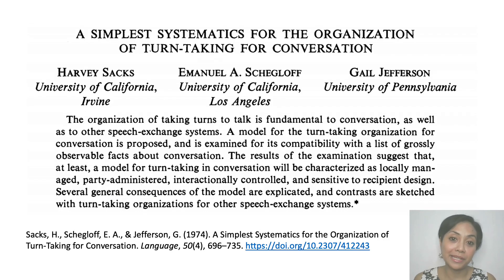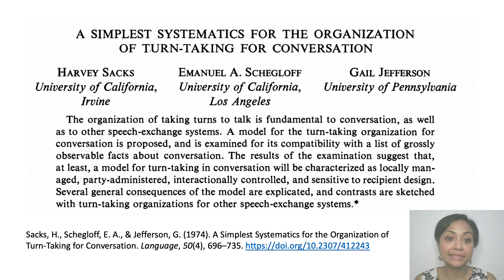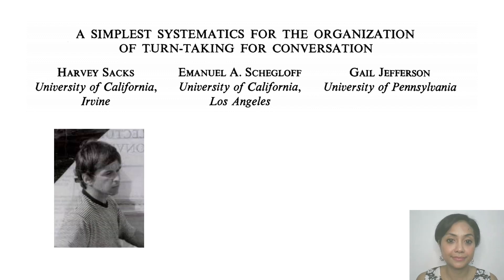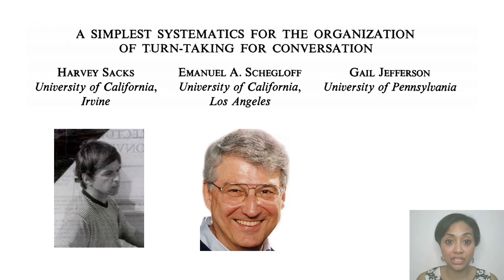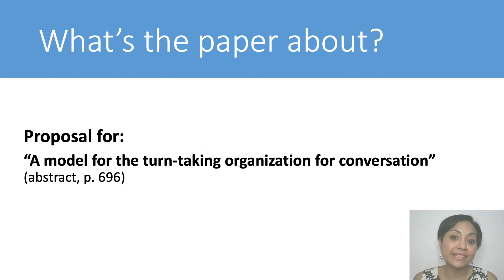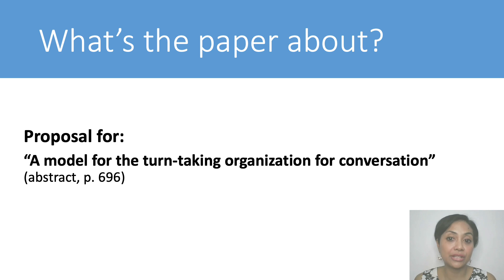Continuing to our main topic: the history of CA has an important milestone, which is the publication of a paper entitled "A Simplest Systematics for the Organization of Turn-Taking for Conversation." The paper is also called SSJ 1974, a shortened form of Sacks, Schegloff, and Jefferson. The paper is mainly a proposal for what SSJ call a model for the turn-taking organization for conversation.